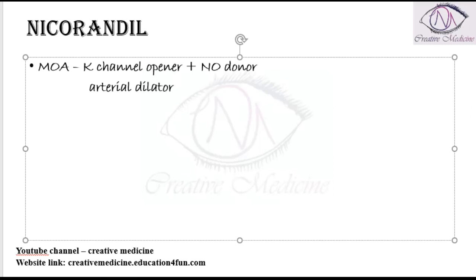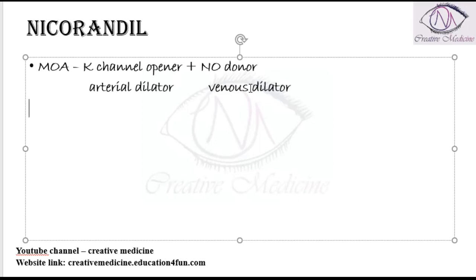As a nitric oxide donor, Nicorandil donates nitric oxide, which acts on cyclic GMP, causing dephosphorylation of myosin light chain kinase, leading to dilatation of the venules — making it a venodilator. So, potassium channel opening causes arteriolar dilation, while nitric oxide causes venodilation, making Nicorandil a combined dilator of both arterioles and venules.